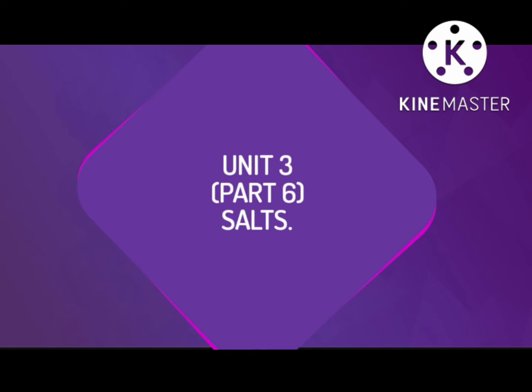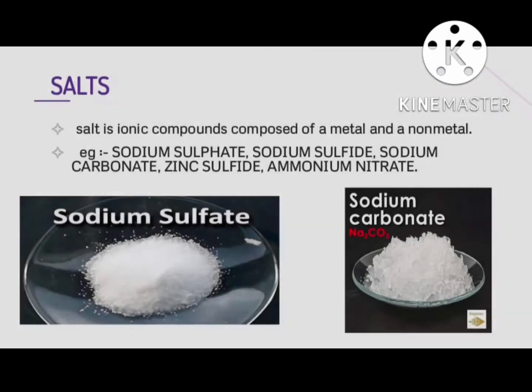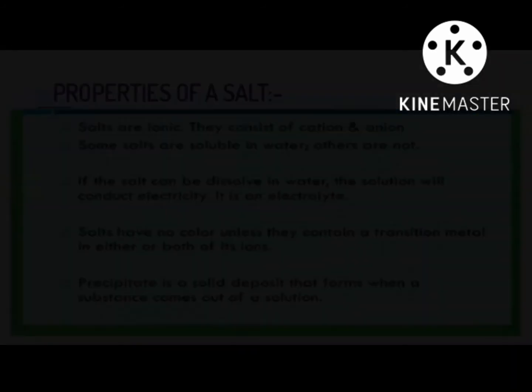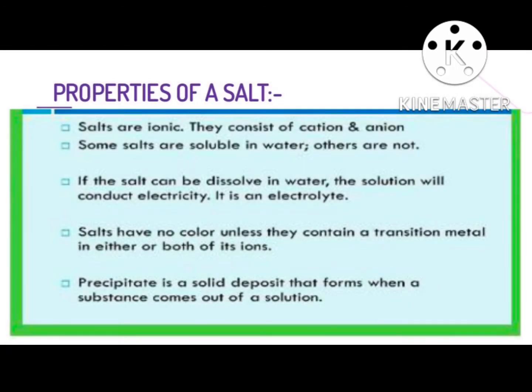1. Salt is an ionic compound composed of metals and non-metals. Examples include sodium sulfate, sodium carbonate, zinc sulfide, and ammonium nitrate. The properties of salts are: they are ionic, and they consist of both cation and anion. 2. Salts are soluble in water.